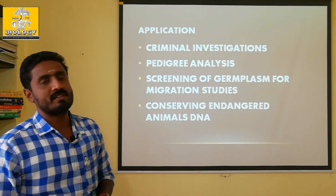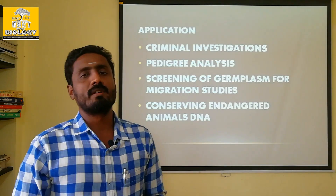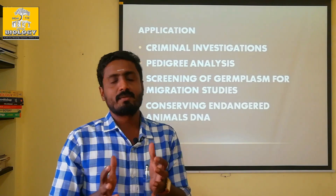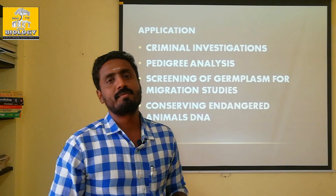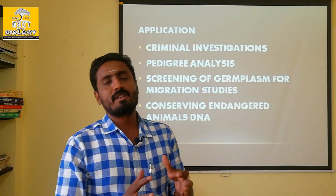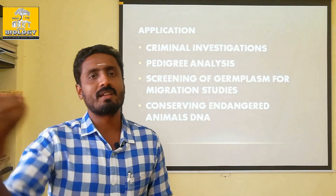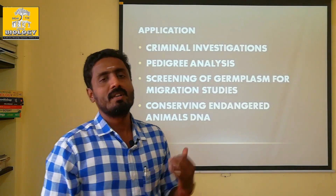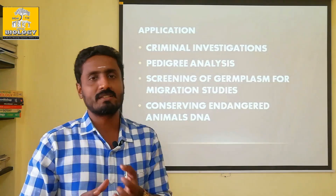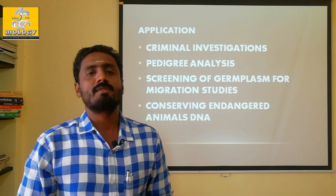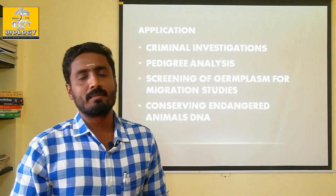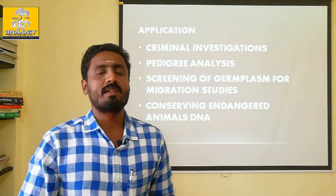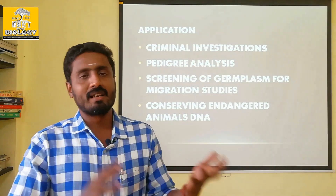Next is the screening of germplasm for migration studies. There is also human population analysis. A particular population can be analyzed. We can analyze any kind of species using DNA fingerprinting. If there is an organism, we can identify its source or home country. For example, if there is a plant, it can be identified as originating from China — such as a source of Coffea arabica. Human beings can also transfer and migrate between countries.